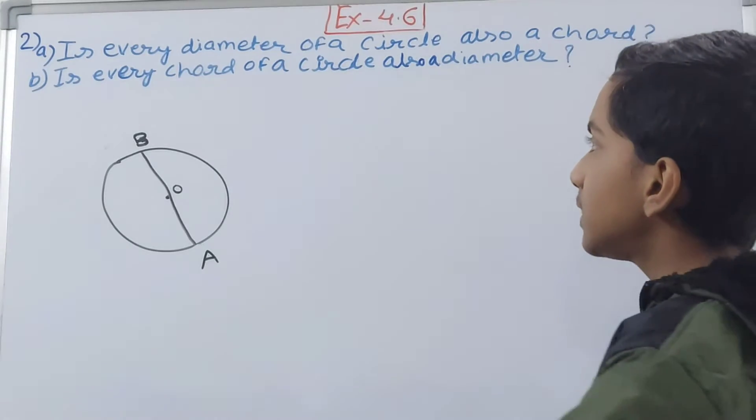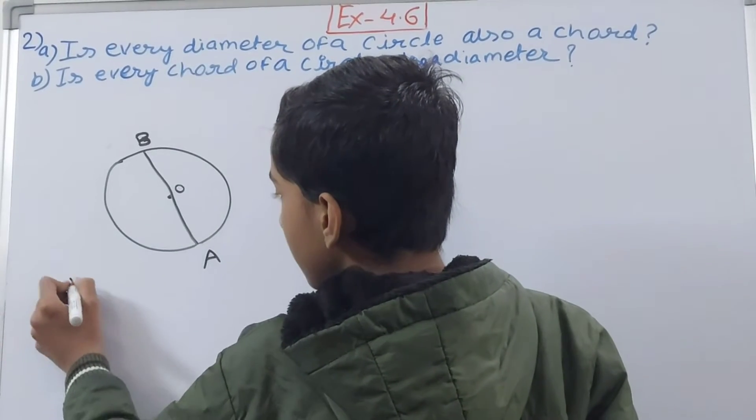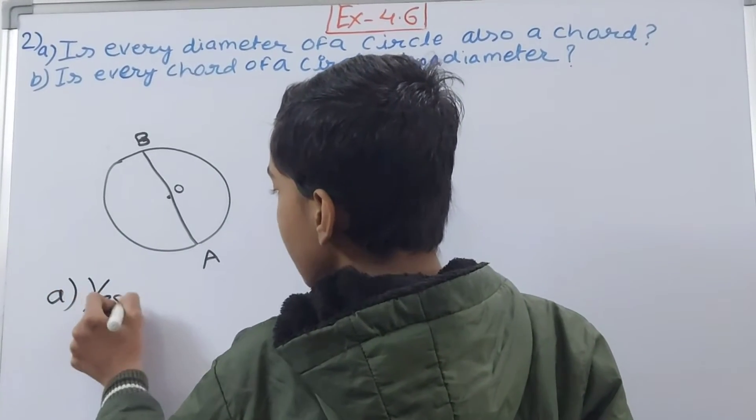A chord can pass through the center. So you can see it is passing through the center, so it is filling all the three characteristics of a chord. So that means yes, answer to the part A is yes, every diameter of a circle is a chord as well.